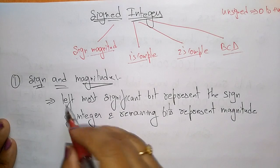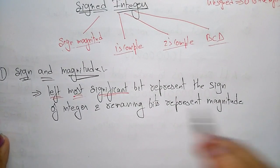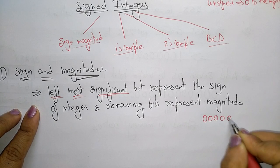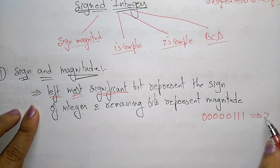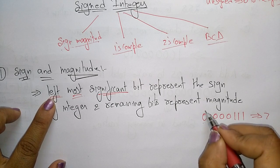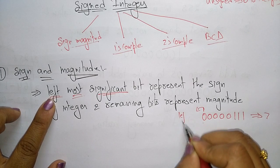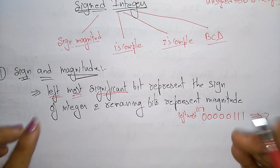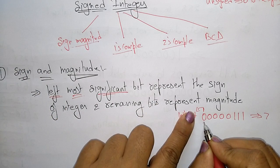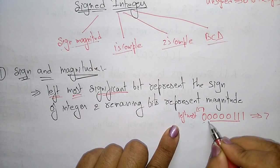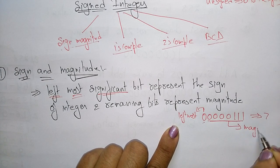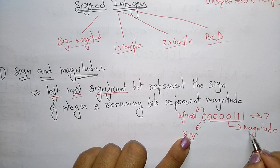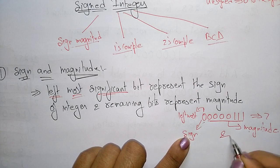The leftmost significant bit is the sign bit. For example, take the binary number 0 0 0 0 0 1 1 1, which represents decimal 7. The leftmost bit here is 0 — this is the leftmost most significant bit. It represents the sign of the integer, and the remaining bits represent the magnitude.